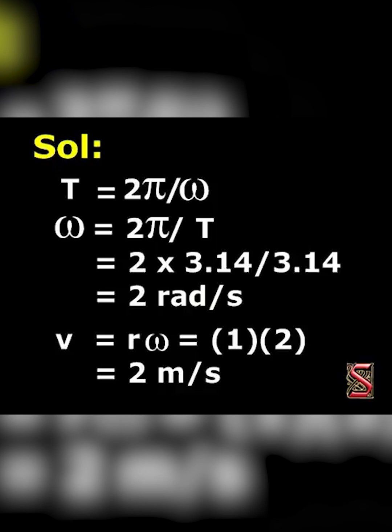The time period is given by 2π divided by omega. Therefore, omega is equal to 2π divided by T. Substituting the values, that is equal to 2 radians per second. Therefore, linear velocity V is equal to R times omega, where R equals 1 and omega equals 2. Therefore, V equals 1 into 2, that is equal to 2 meters per second.